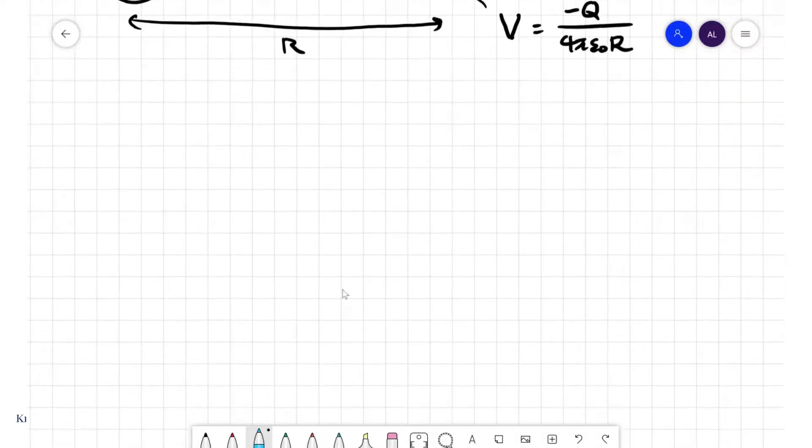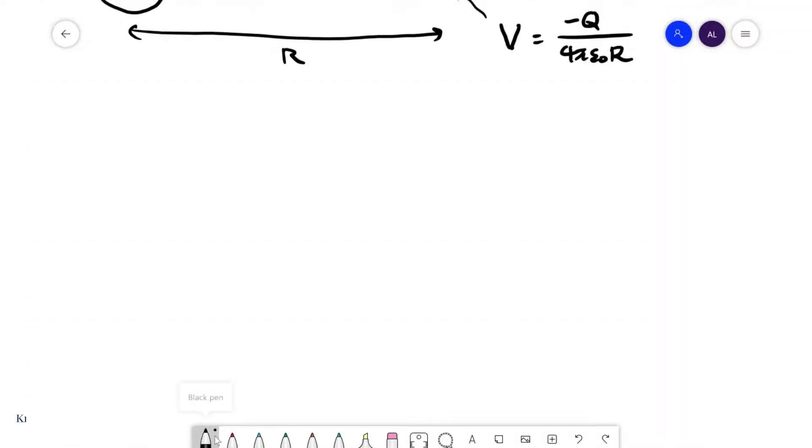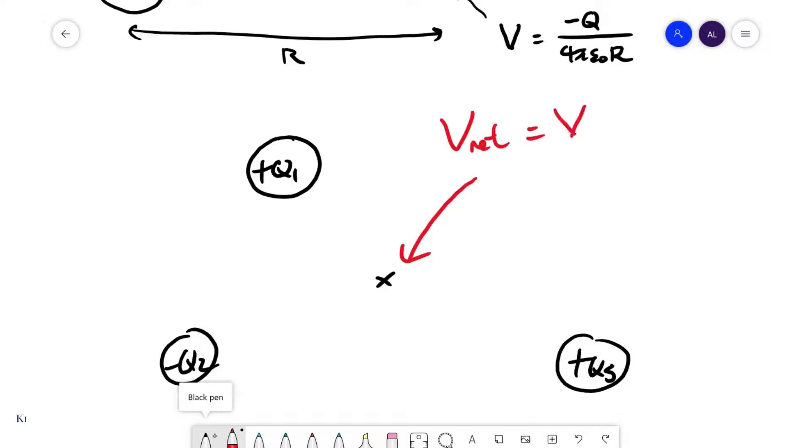Essentially the bottom line is, when we calculate the electric potential at the point, remember that it is very sign sensitive. Now if I have a system of charges, quite a few of them for that matter, and I want to calculate the potential at a point, remember that the potential here V net is simply the scalar sum of all the potentials created by each one of these charges at that point.